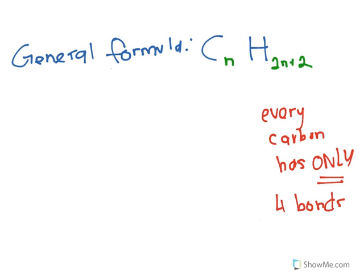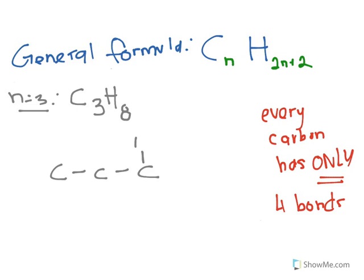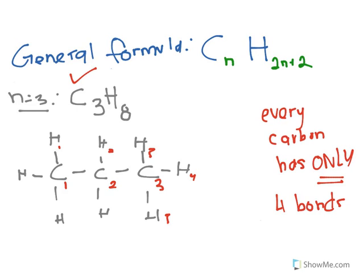Let's try another example with n equals 3, so 3 carbons. C3, H(2×3+2) = H8, giving us C3H8. Now draw the structural formula: 3 carbons, all single bonds. Each carbon must have 4 bonds. The first carbon bonds to 3 hydrogen, the middle carbon bonds to 2 hydrogen, and the last carbon bonds to 3 hydrogen. Let's count: C3 — yes, 3 carbons. H8 — 1, 2, 3, 4, 5, 6, 7, 8. Yes, C3H8 is correct.